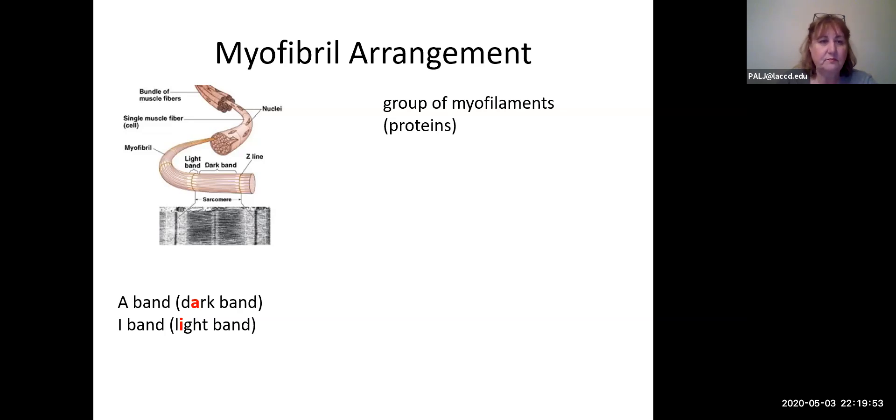In the middle of the I band we have that dark line, and that dark line is called a Z disc or a Z line. In reality it's not a straight line, it's actually kind of a zigzag line. In different pictures it'll look differently. Sometimes when you're drawing stick figures you'll just draw it as a straight line. It doesn't matter if disc is D-I-S-C or D-I-S-K.